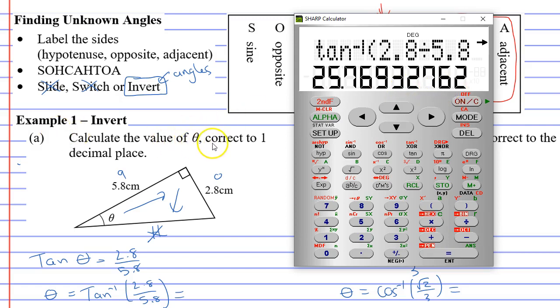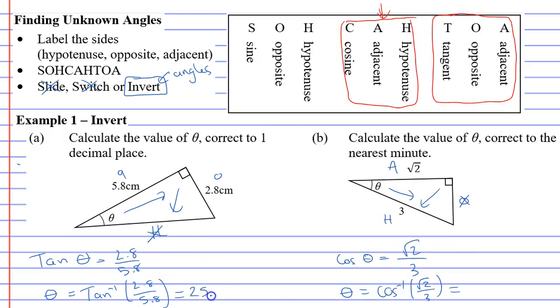Now question A wants the answer to one decimal place. So we're going to go 25.8, we're going to round up. 25.8 degrees.